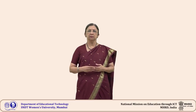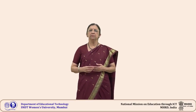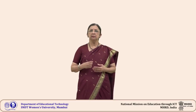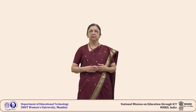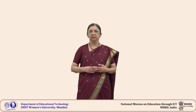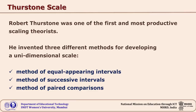If you know how to construct a scale, that procedure can be followed and the attitude scale you want to develop will be of better quality. The first scale is the Thurston scale. Robert Thurston was one of the first and most productive scaling theorists. He invented three different methods for developing unidimensional scales: the method of equal appearing intervals, the method of successive intervals, and the method of paired comparisons.